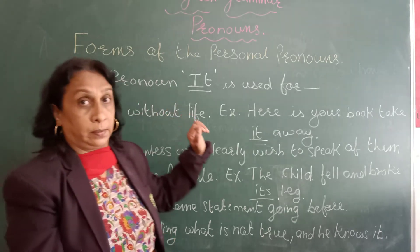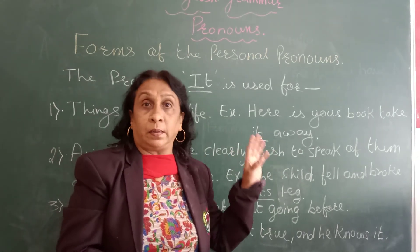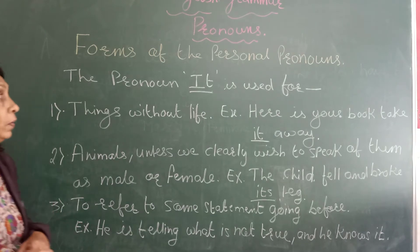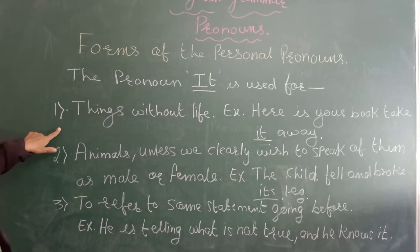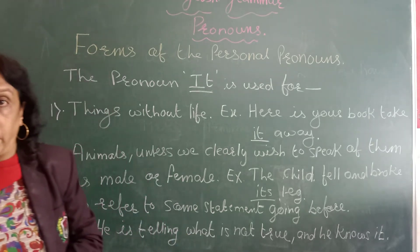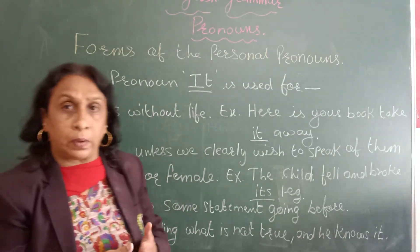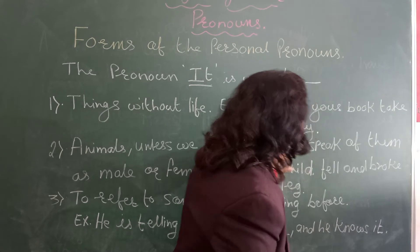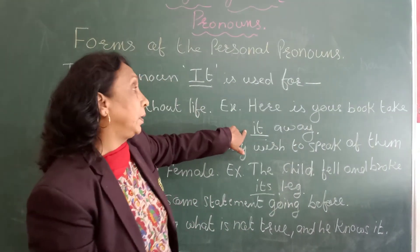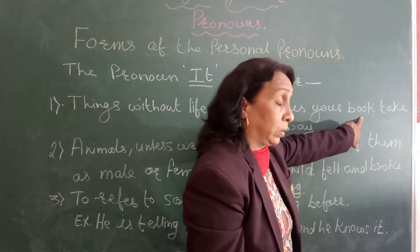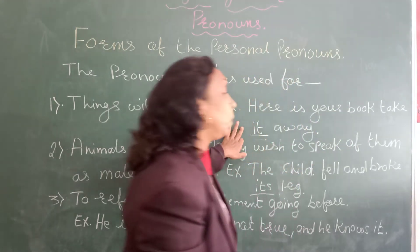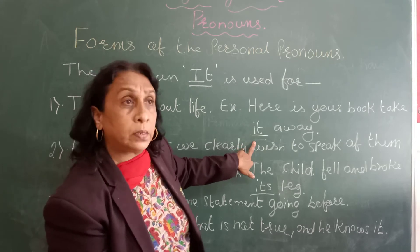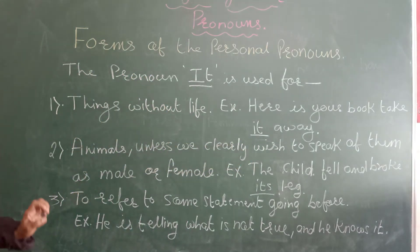Now let us look at the pronoun 'it'. In the third person we have masculine, feminine, and neuter gender. In neuter gender we use 'it' or 'its'. Now let us see where the pronoun 'it' is used. First, it is used with things without life — that is, non-living things. It might be a book, a chair — anything which does not have life. For example: 'Here is your book, take it away.' Here 'it' is used instead of the noun 'book'.